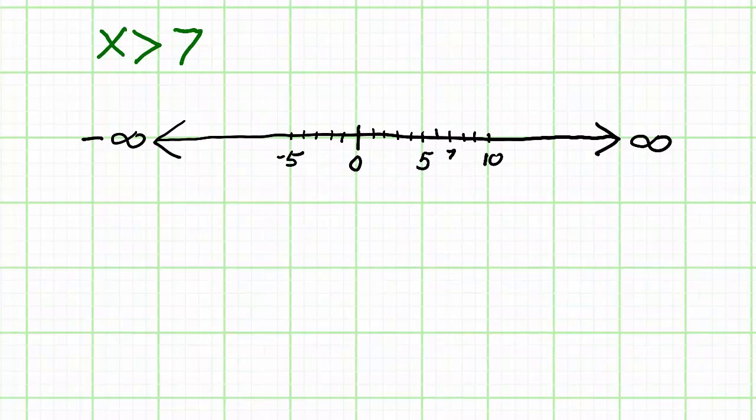Now I locate 7 because that's the endpoint. I make a parenthesis whose arms are pointing right and an arrow going to the right.